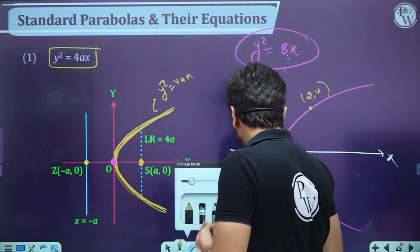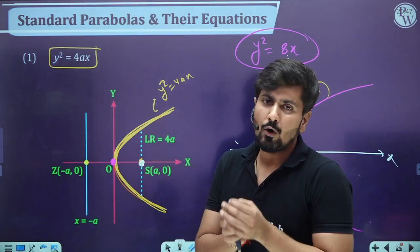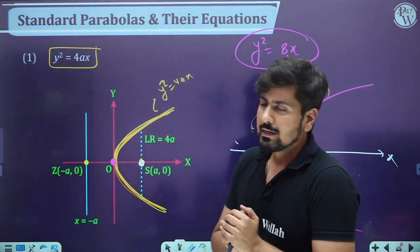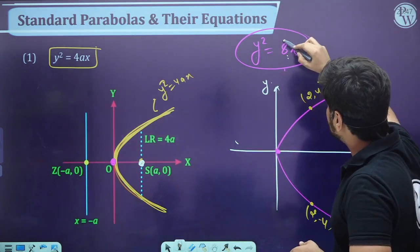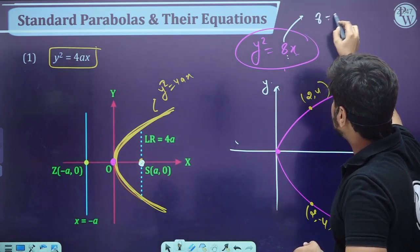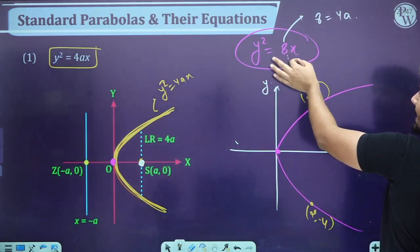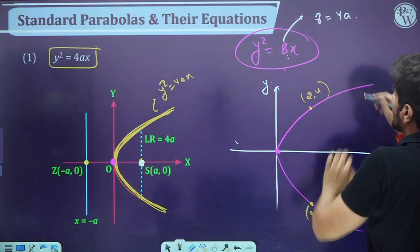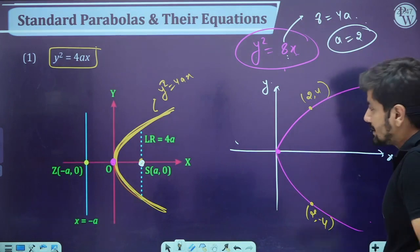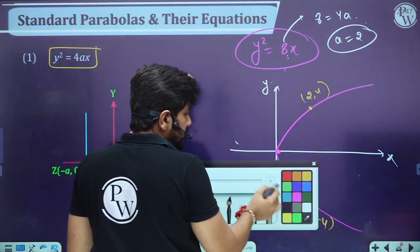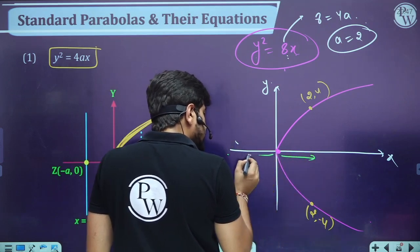For y² = 4ax, the focus is at (a, 0). For y² = 8x, compare with y² = 4ax: 4a = 8, so a = 2. Therefore focus is at (2, 0) and directrix is x = −2. Every point on the parabola satisfies SP = PM — distance from focus equals distance from directrix.